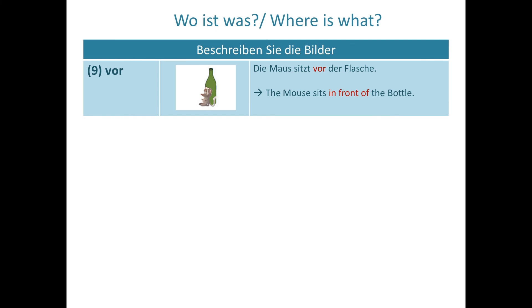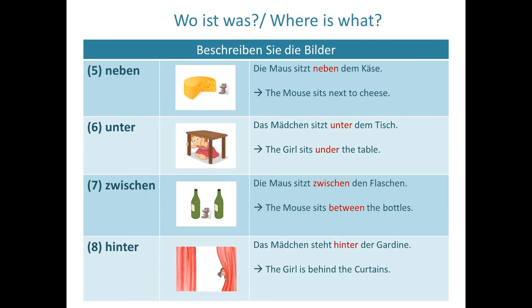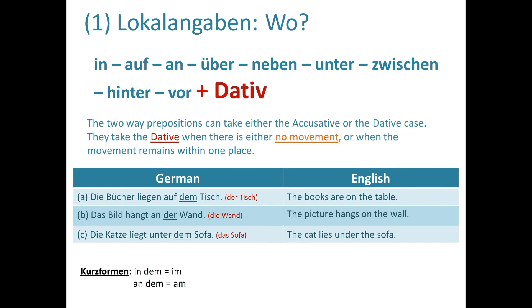So these were the nine prepositions illustrating the 'Wo?' question. All of these examples were in the dative case. Now let's get into the real grammar. These nine prepositions take the dative case, and the key question for dative is always 'Wo?' — where is the object?